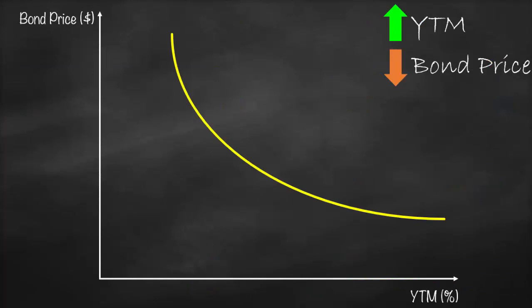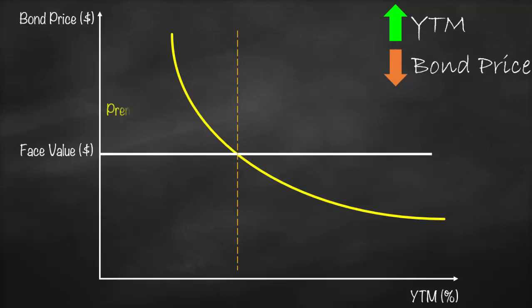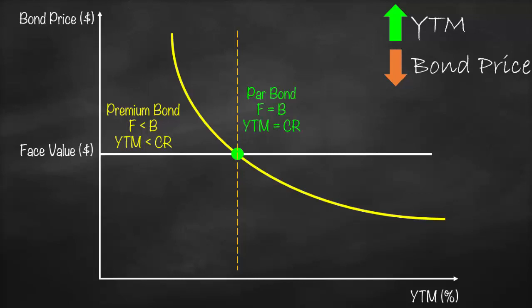We can reflect all of this in our graph. Face value is a constant line. Any bond price above face value is a premium bond, meaning coupon rate > yield to maturity. When bond price equals face value, it's a par bond, meaning coupon rate equals yield to maturity. When bond price is below face value, it's a discount bond, meaning coupon rate < yield to maturity. I'll see you next time.